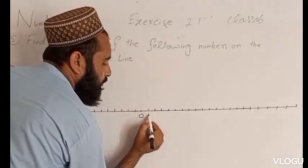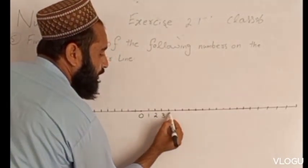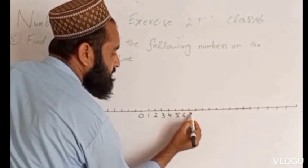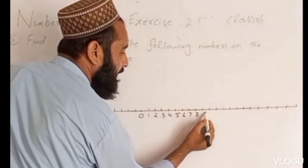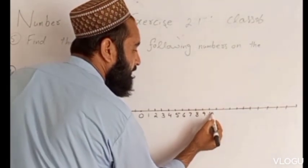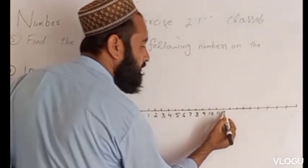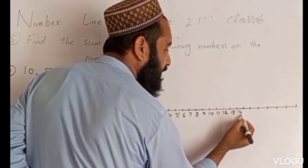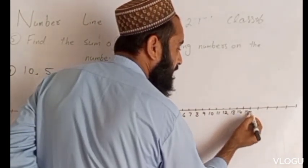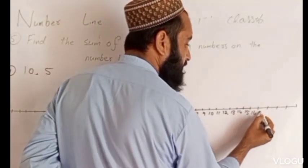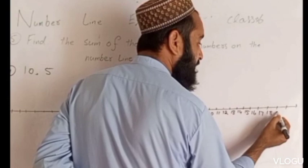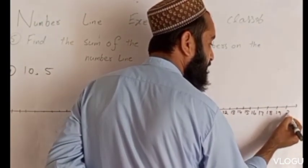1, 2, 3, 4, 5, 6, 7, 8, 9, 10, 11, 12, 13, 14, 15, 16, 17, 18, 19, 20.